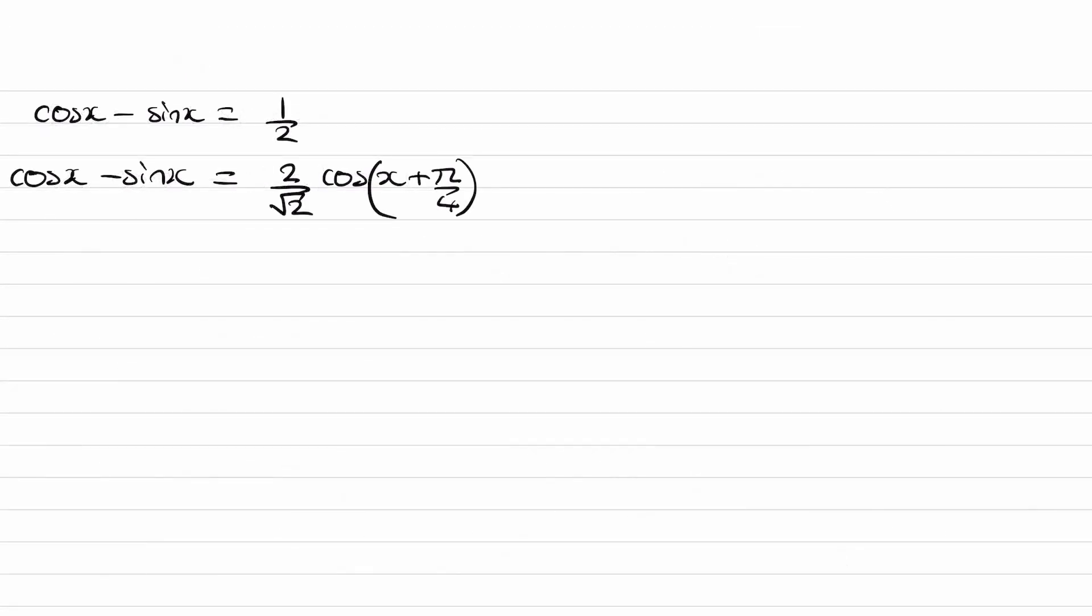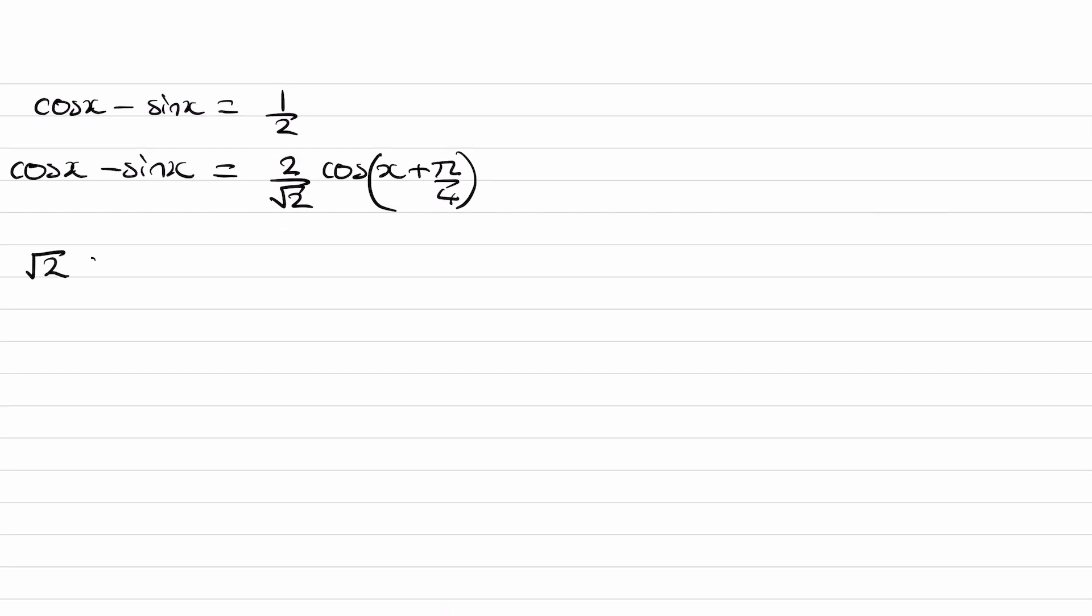And here are those two equations. This is the one we're trying to solve. This was what we showed in part B. Combine the two things together. So we then end up with, so first of all 2 over √2 that's the same thing as just √2. So we end up with √2 cos(x + π/4) is equal to a half. We can solve this.